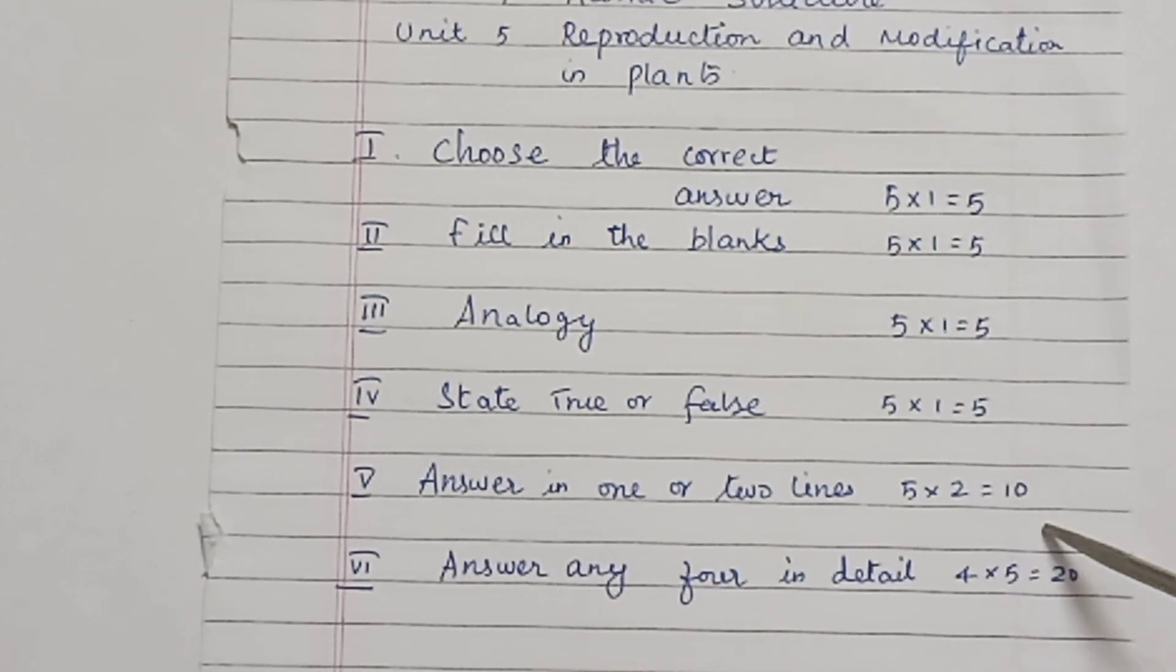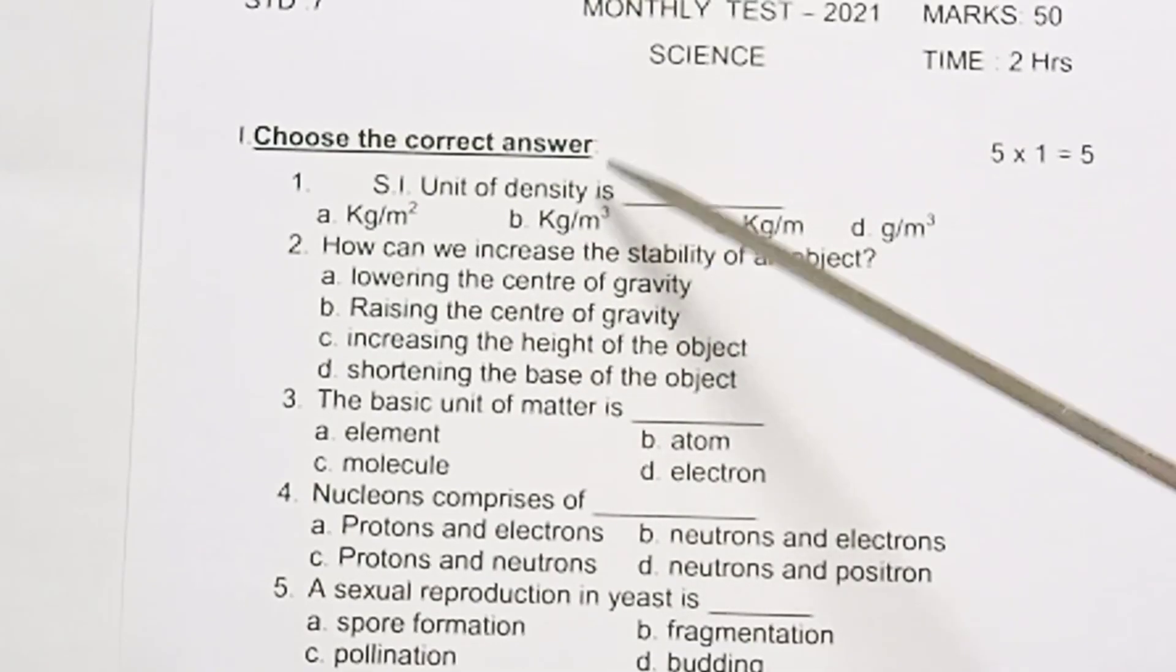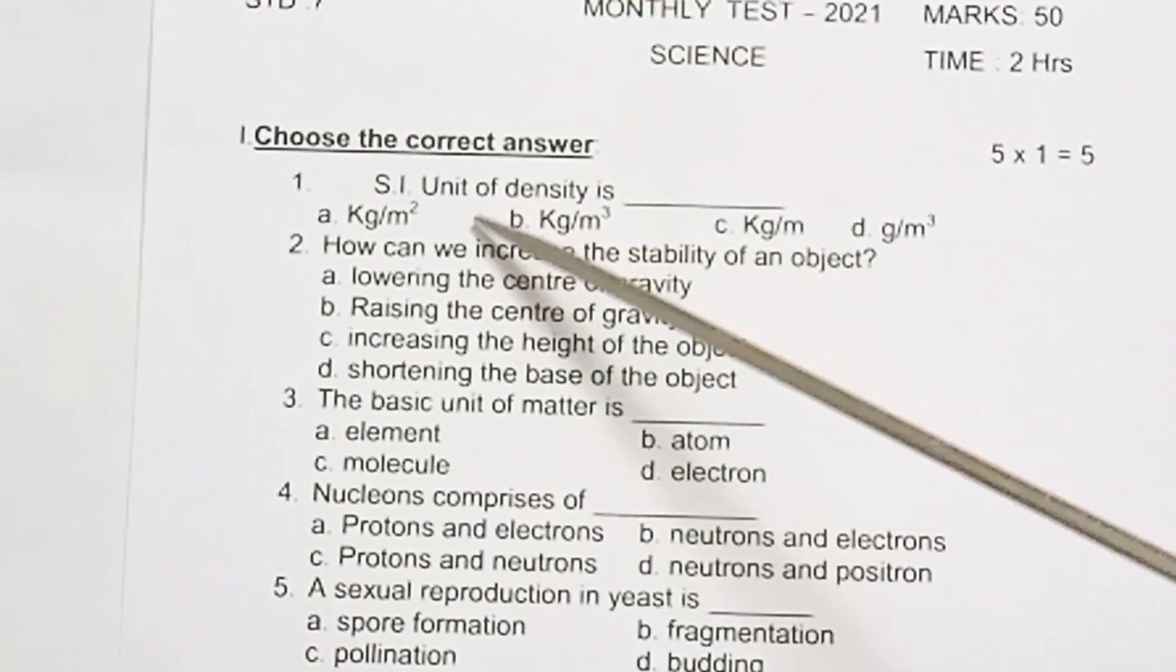Overall 50 marks. Standard 7 Monthly Test 2021, Science, marks 50, time 2 hours. Format 1: Choose the correct answer, 5 into 1 equals 5 marks. First one: